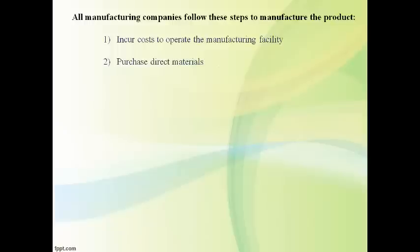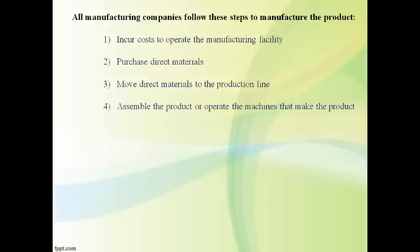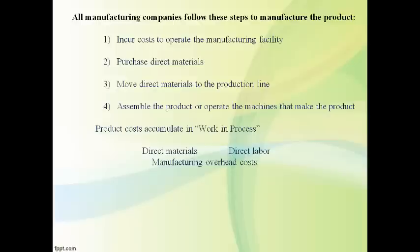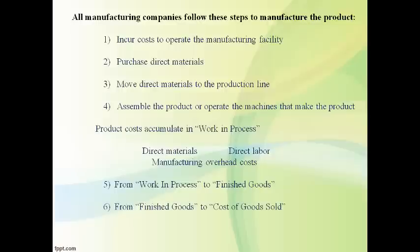All manufacturing companies follow the same steps to produce their products. The manufacturing facility and product line are first established. Materials are purchased and stored in the direct materials warehouse. Direct materials that become part of the product are moved to the production line. Direct labor works on the production line to make the products. The three product costs are incurred while the product is made on the production line, where work in process occurs. Products that are finished are moved from the production line to the finished goods warehouse. Finished goods shipped to customers are reported on the income statement as cost of goods sold.